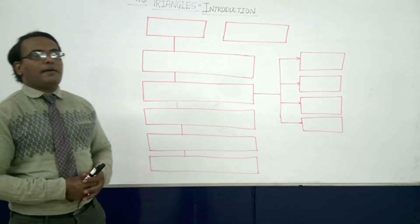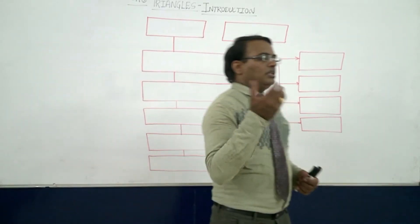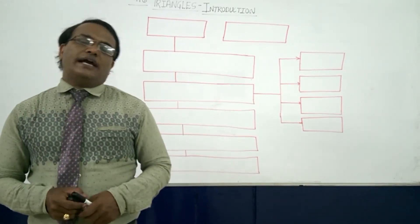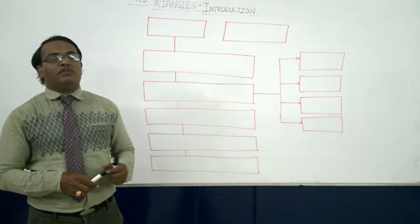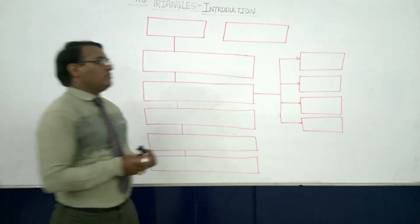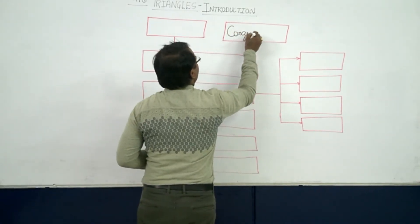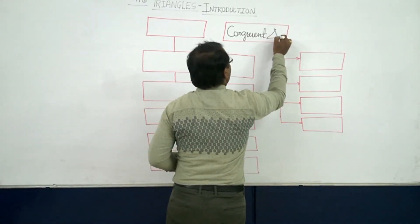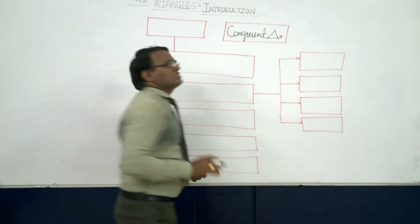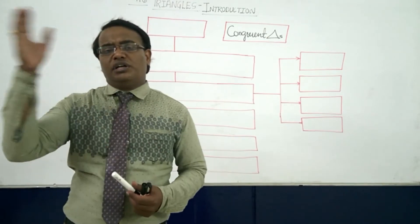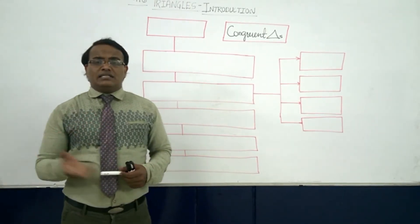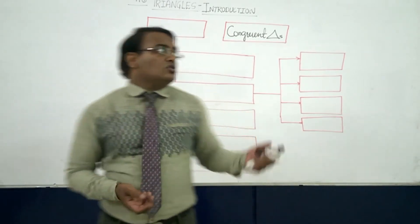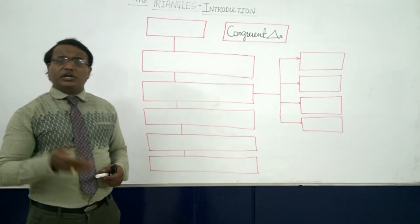Here we are going to see the introduction part. In the last year, we were doing congruency — two triangles are equal to each other. We discussed congruent triangles and the different criteria of congruency: SSS, ASA, SAS, and RHS. So how to prove that the triangles are congruent, we have already seen.